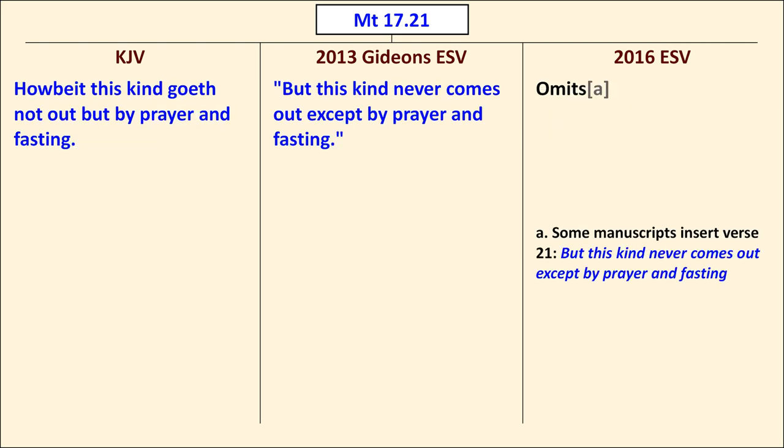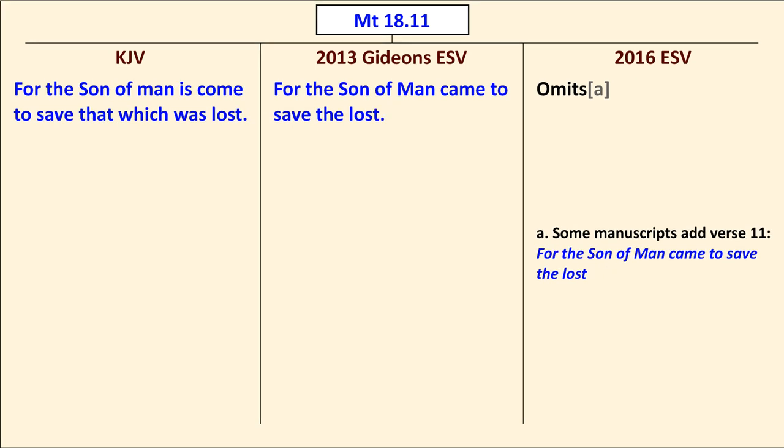In Matthew 17:21, the Gideon's ESV does follow the TR — "but this kind never comes out except by prayer and fasting" — a section that the 2016 ESV relegates to a footnote. In Matthew 18:11, the Gideon's ESV includes "For the Son of Man came to save the lost," which is relegated by the 2016 ESV to a footnote.